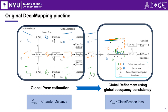The original DeepMapping loss consists of two components. On the left side, we use the chamfer loss to constrain the alignment between two consecutive frames in the global space, ensuring relatively accurate and consistent estimation of the robot poses. On the right side, we employ classification loss to refine the estimated poses by measuring the sum of binary cross-entropy for each sample point in the global space.